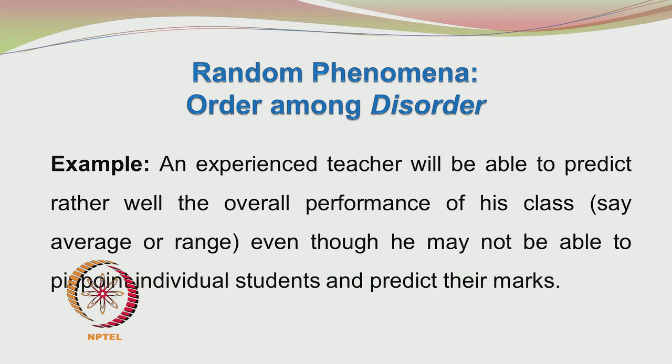A simple example would be an experienced teacher in a class. He will be able to predict rather well the overall performance of his class in terms of average or range, even though he may not be able to pinpoint individual students' marks. He may say the highest mark is likely to be about 80, about 10% of the class will get between 70 to 80, and maybe 5% of the class will get marks below 30.